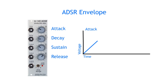After the attack stage is done and while the gate signal is still high, the decay stage sets in, which is a falling CV level from maximum to a set sustain level. The time it takes for the fall is set by the decay knob, and the level of the sustain is set by the sustain knob. When the decay stage is done and the gate is still high, the CV level will stay at the set sustain level for as long as the gate is high.